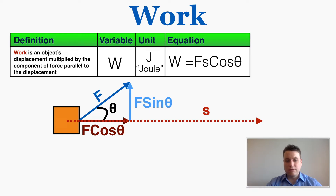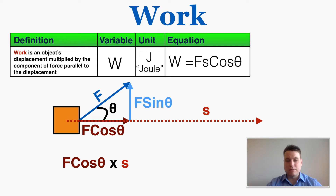The force times the cosine of the angle is equal to the force component that's adjacent to the displacement, which according to our definition is the component we need to calculate the work. So the work is equal to that adjacent component times the displacement. That's where we get the equation: force times displacement times the cosine of the angle between them.